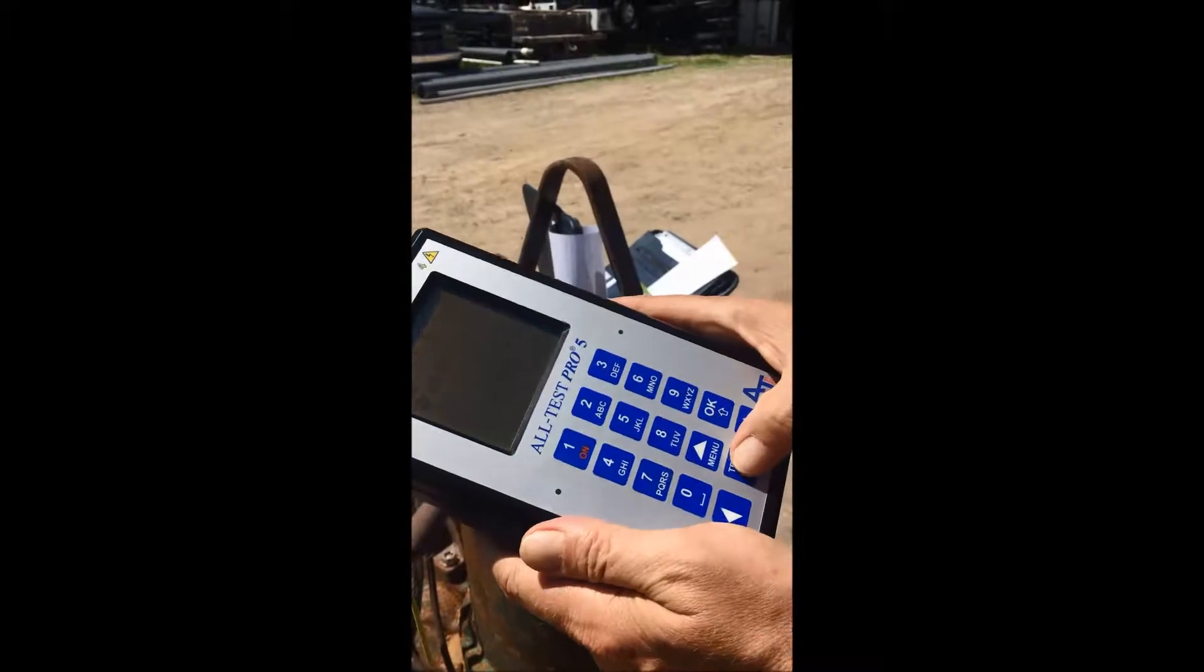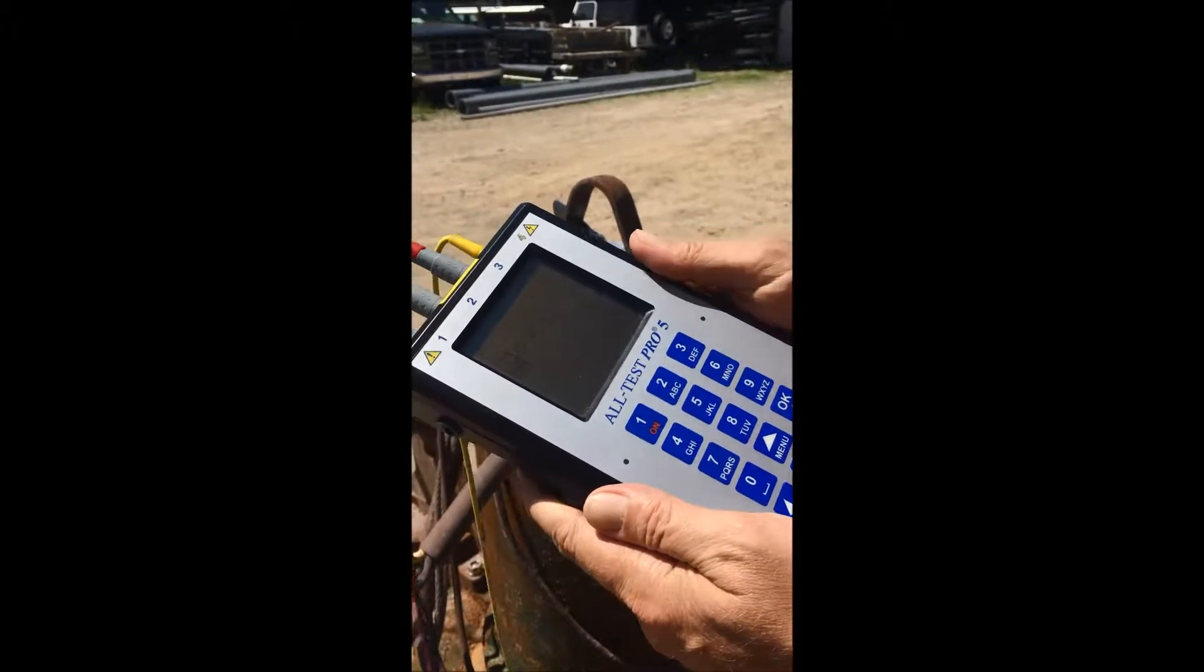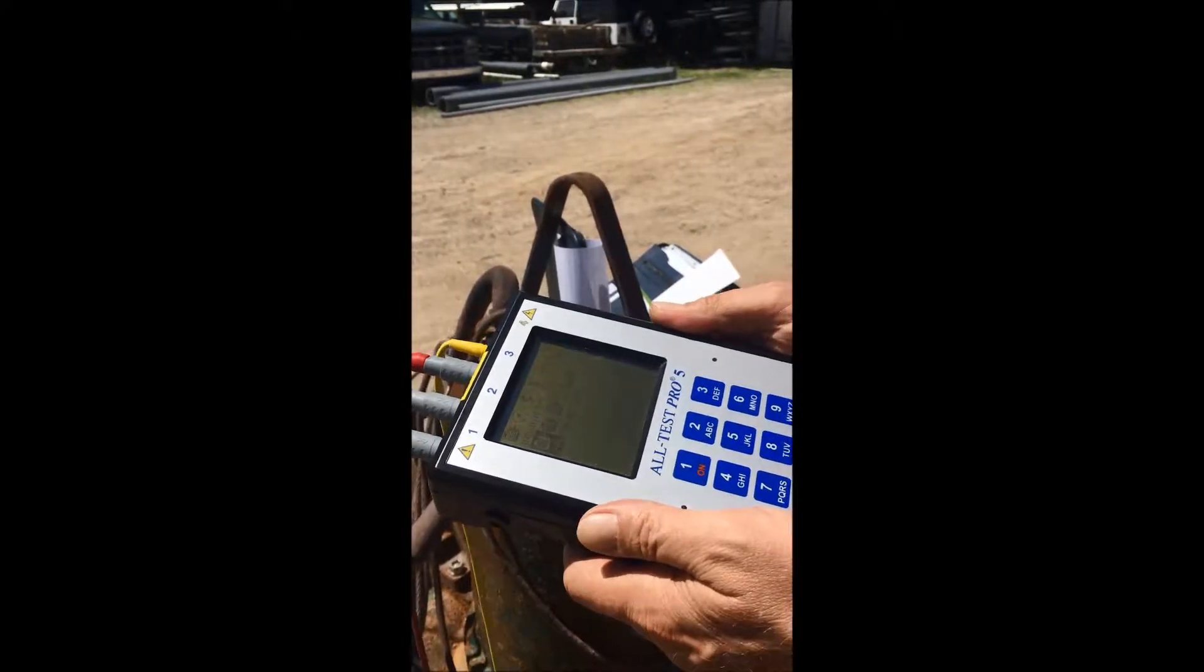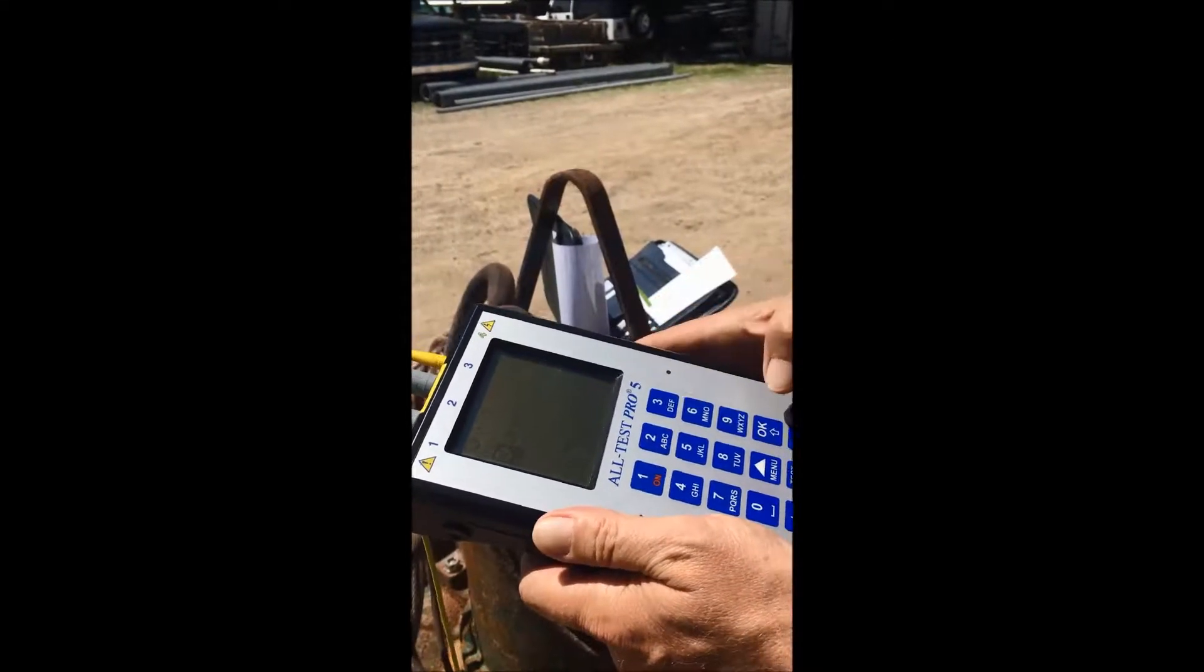What we're going to do is arrow down to run a Z5 test. This is either an installed motor or a motor that we cannot turn the shaft. We're going to select OK.